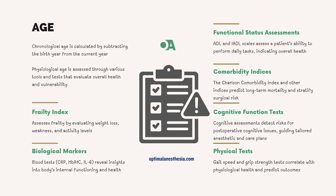So why does this matter? By understanding both chronological and physiological age, anesthesiologists can create more precise and individualized anesthetic plans. For example, a 70-year-old marathon runner might handle anesthesia and surgery better than a 50-year-old with multiple comorbidities. By incorporating tools like the frailty index, biological markers, functional status assessments, comorbidity indices, cognitive function tests, and physical tests, we can develop a comprehensive understanding of our patients.